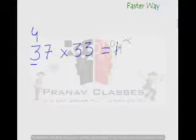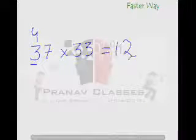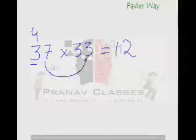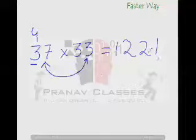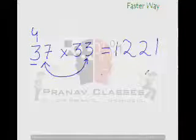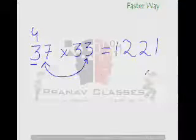These are the first two digits of your answer. For the last two digits, you multiply the units digit. 7 times 3 is 21, so the answer is 1221. Voila, isn't that easy? That is why I gave you three seconds.